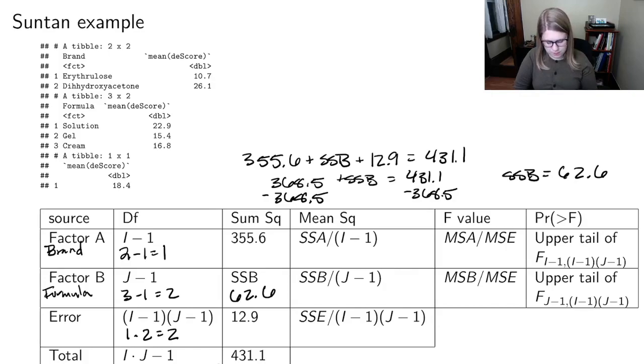And then for the mean squares, we're going to take our sum of squares and divide by the degrees of freedom. So in this case, I've got 355.6 divided by one is just 355.6. Then I've got 62.6 divided by two, which is 31.3. And then I've got 12.9 divided by two, which is 6.45.